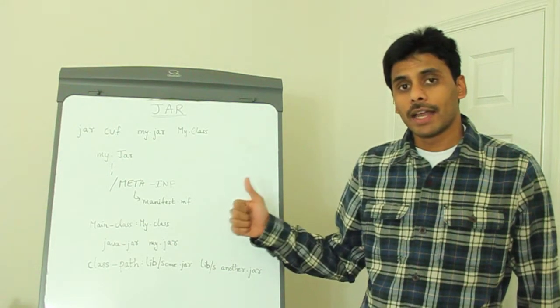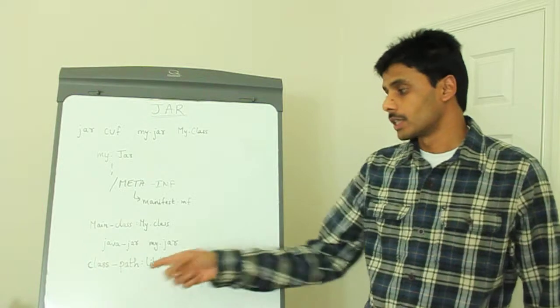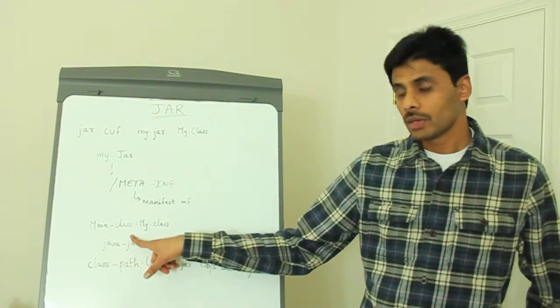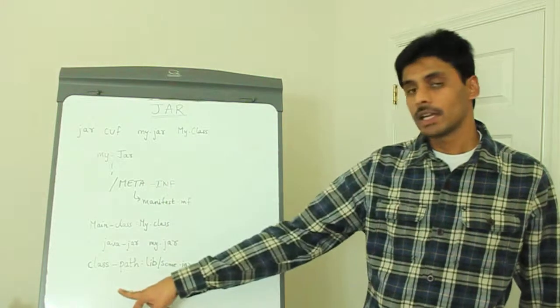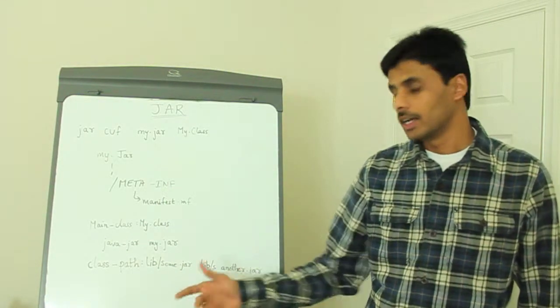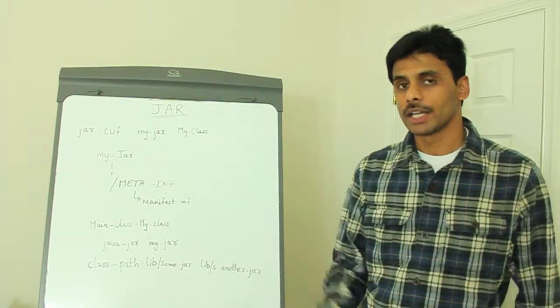One, we can make a JAR an executable JAR by listing it using the main-class attribute. Two, we can add any dependencies for our JAR file using the class-path attribute and listing all the JARs that particular JAR depends on.